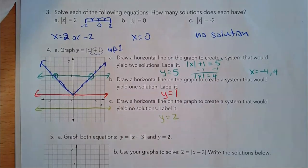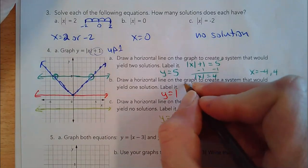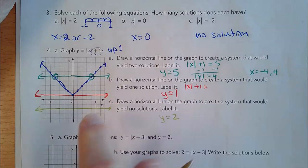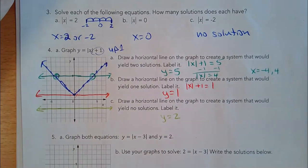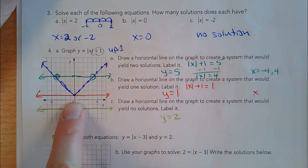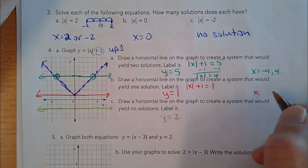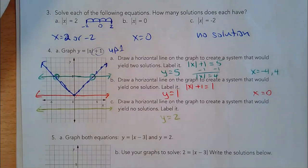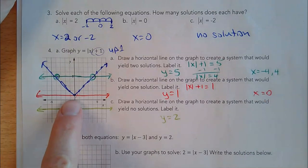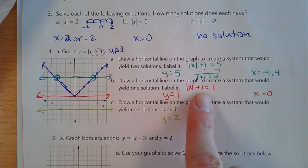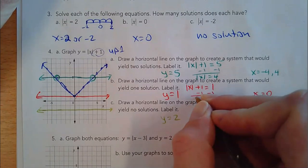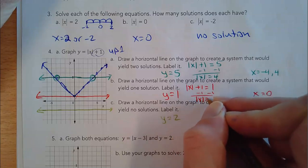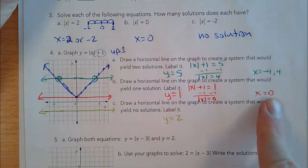And then part b: if I set the absolute value of x plus 1 equal to 1, looking at the graph, what x value makes that true? Where do they meet? When x is zero, they meet. If I subtract 1 from both sides, I get the absolute value of x equals 0. There's only one answer: zero.